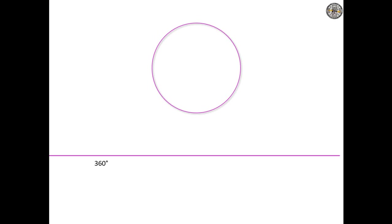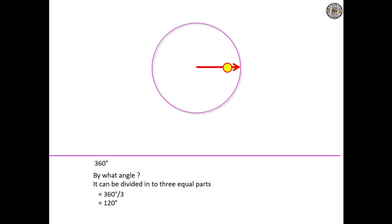A circle is 360 degrees. By what angle can we divide it into three equal parts? Think of it as a cake that I want to divide equally among three people. If your answer is 120 degrees, you are right. So I'll be cutting the cake at 120 degrees each.